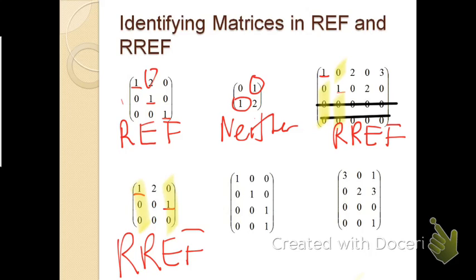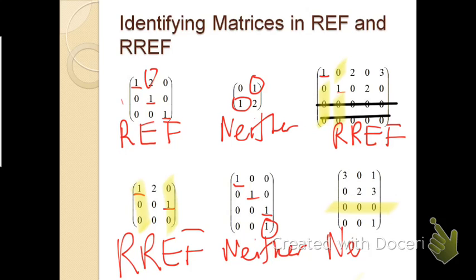For the fifth matrix, we have leading ones, but the leading entry in the last row is not further to the right than the leading entry of the row above it, so this is neither. For the sixth matrix, there is a row of zeros that is not at the bottom, so this is also neither.